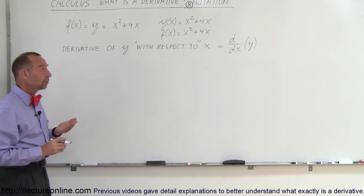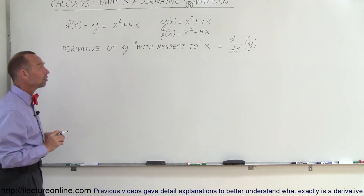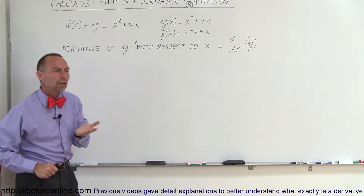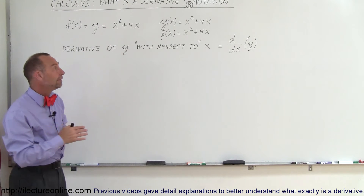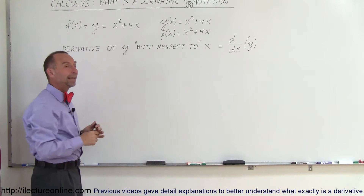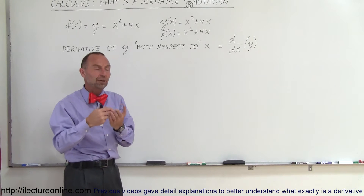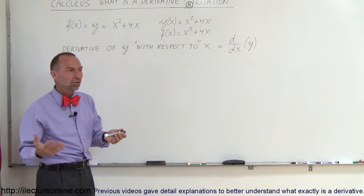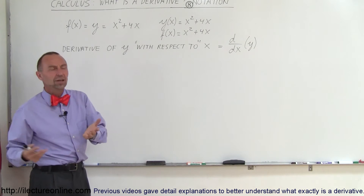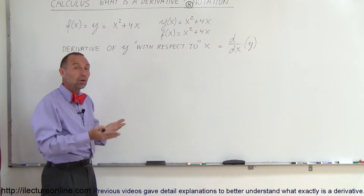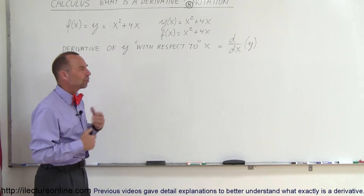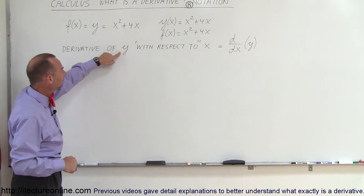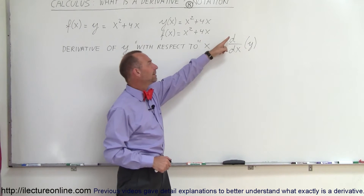The same is true for derivatives, but sometimes there's a special meaning for some of the notation. The derivative of y with respect to x — you hear that a lot. Typically y is the dependent variable and 'with respect to' becomes the independent variable. You don't have to use y and x; you can use z and w, z and s, any characters. When we take the derivative of y with respect to x, we write d/dx of y.